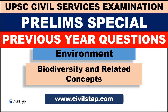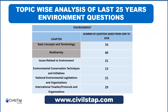Hi friends, welcome back to Civil Stab. This is our previous lecture series of the environment module. We will cover the last 25 years, i.e. 1995-2018, all important environment-related questions. We have divided these environment questions into 6 chapters and have already covered the basic concepts and terminology chapter, and have started with the most important chapter, that is biodiversity.